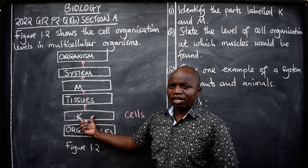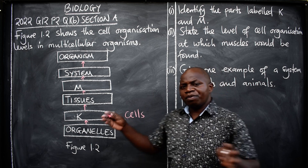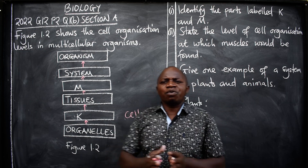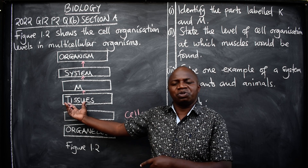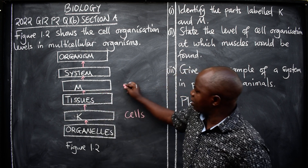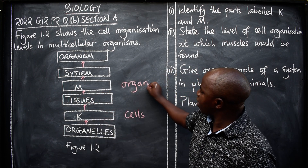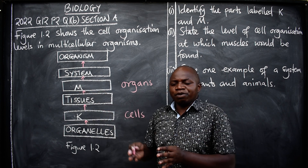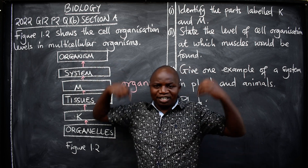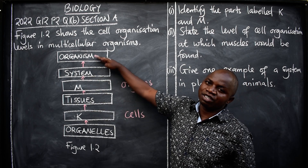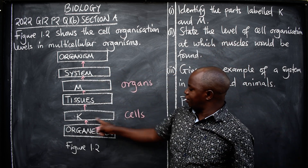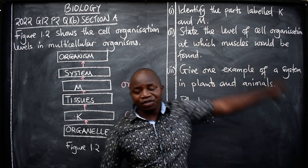When we put cells of similar function together, what are we forming? We are forming what we call tissues. Then a group of tissues makes an organ. When we put organs together they form a system, and the system forms the organism. So we have answered the first part: K is cells and M is organs.